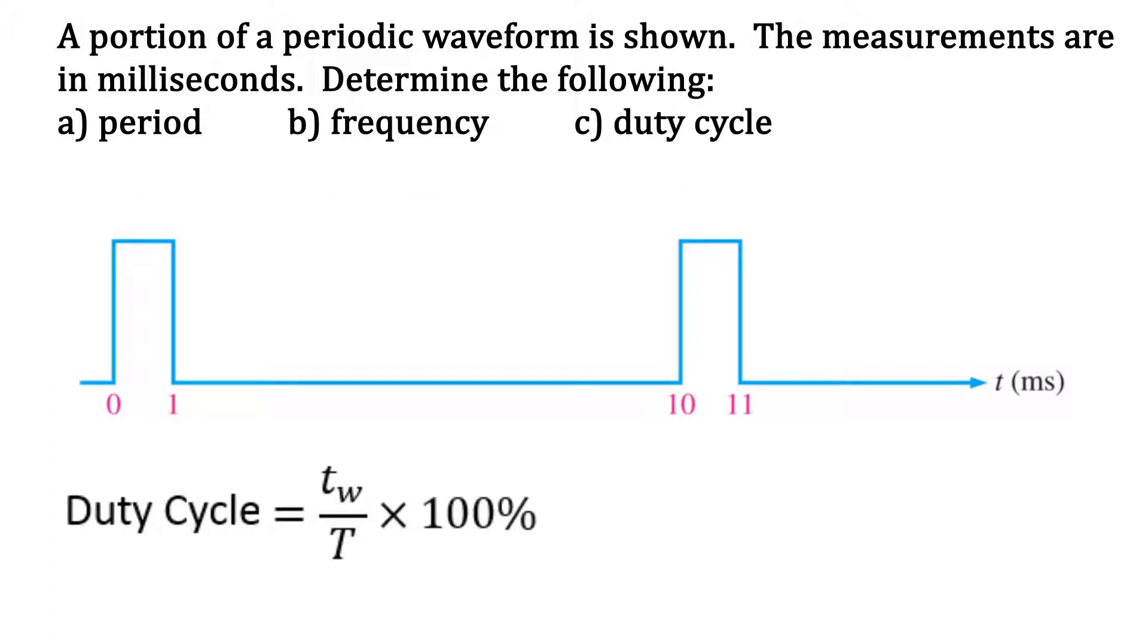In this example, the pulse width lasts from 0 milliseconds to 1 millisecond, so the pulse width is 1 millisecond. The duty cycle can be found by dividing 1 millisecond by 10 milliseconds and multiplying by 100%. The duty cycle is unitless, and both the pulse width and period are in milliseconds. They're going to divide out, so there's no need to convert these to seconds.